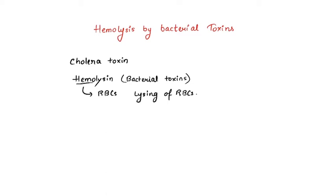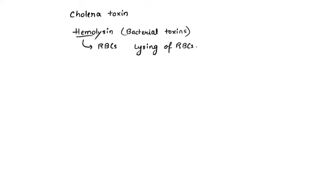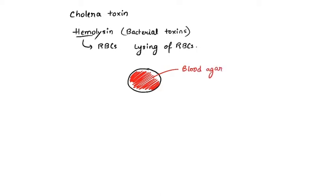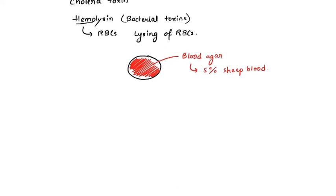While checking the effect of hemolysins or hemolysis on eukaryotic cells, we generally make an agar plate using a special kind of agar called blood agar. Blood agar is made by mixing five percent sheep blood with the normal agar medium that you prepare in the lab.